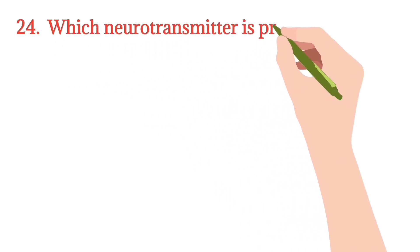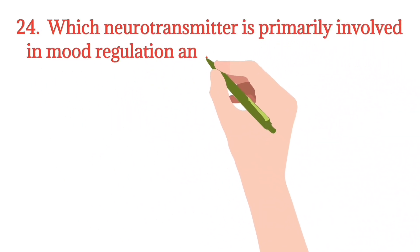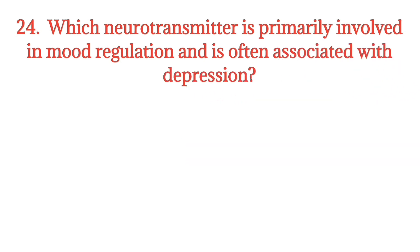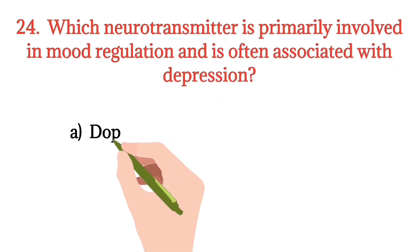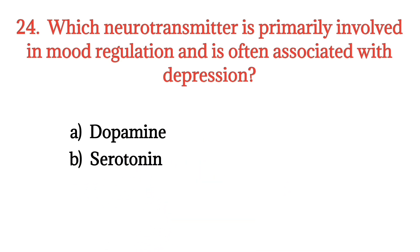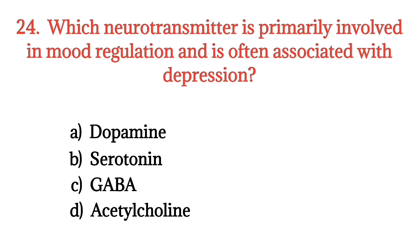MCQ number 24. Which neurotransmitter is primarily involved in mood regulation and is often associated with depression? Option A: Dopamine. Option B: Serotonin. Option C: GABA. Option D: Acetylcholine. The right option is Option B.